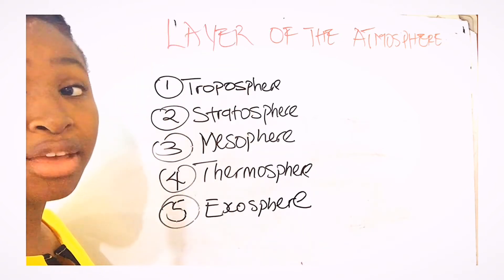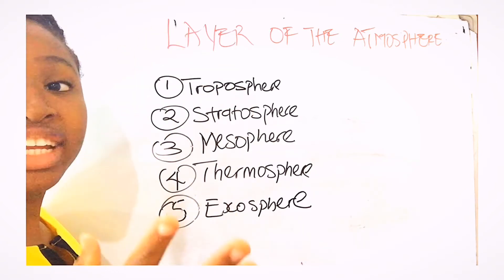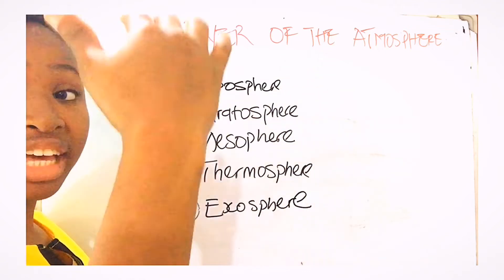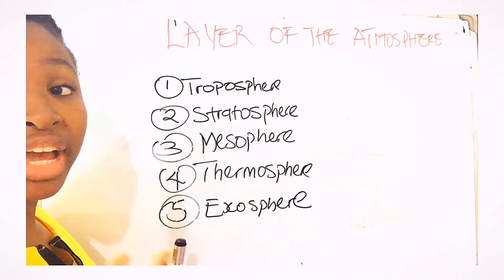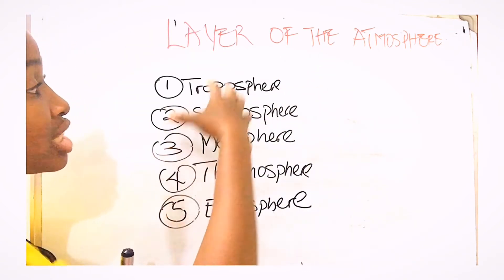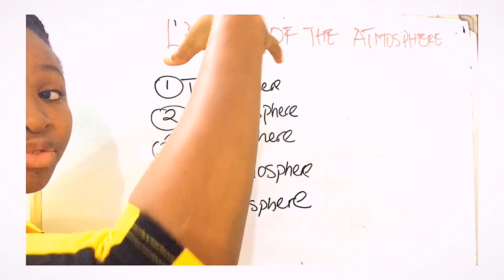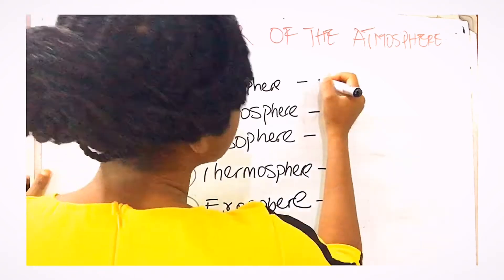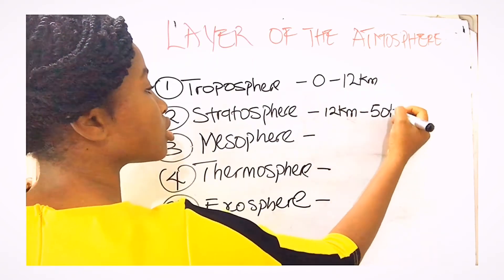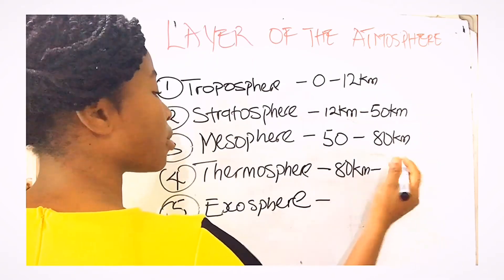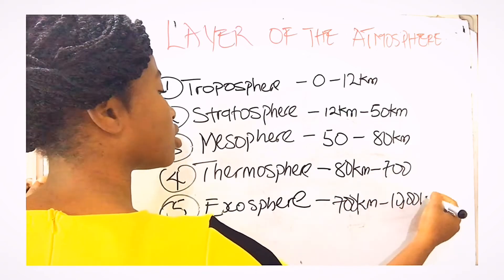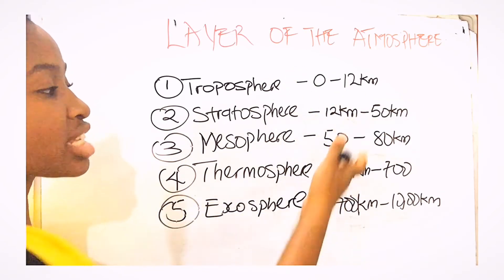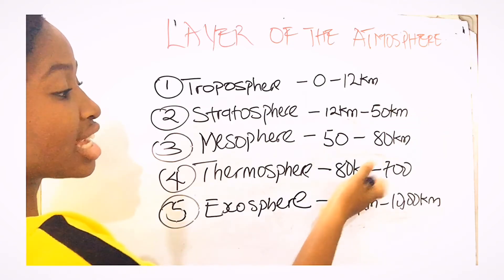We are going to be discussing the major parts that are important for flying. I'm also going to put in the distance from the earth for each layer. The distances are: troposphere 0 to 12 kilometers, stratosphere 12 to 50 kilometers, mesosphere 50 to 80 kilometers, thermosphere 80 to 700 kilometers, and exosphere 700 to 10,000 kilometers.